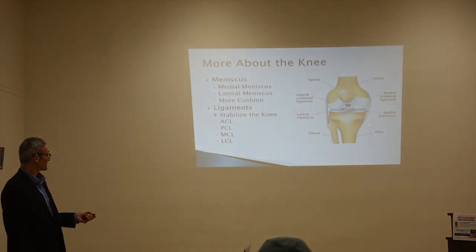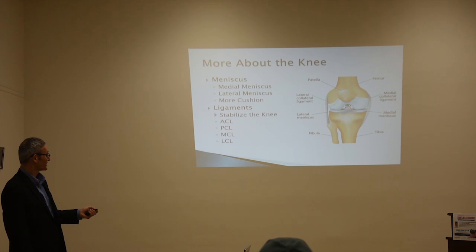The knee is stabilized by ligaments. There's the ACL — the anterior cruciate ligament. There's the PCL, which runs behind. And there are lateral ligaments as well.